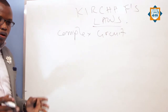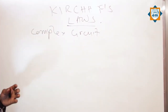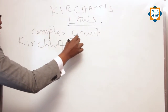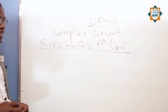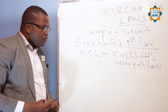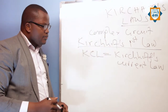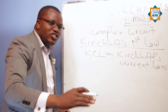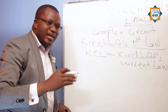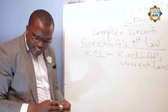Kirchhoff's laws ziko mbili — kuna Kirchhoff first law na kuna Kirchhoff second law. I'll be starting with Kirchhoff first law. Kirchhoff first law is also known as KCL — Kirchhoff current law. KCL ina state that the summation of the current entering any junction is equal to the summation of the current leaving the junction.